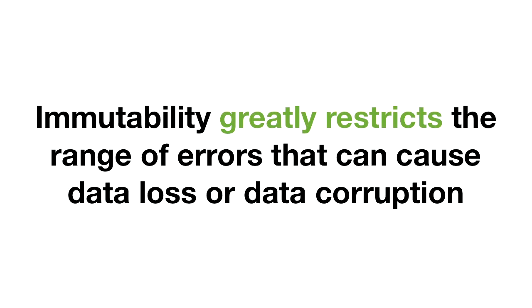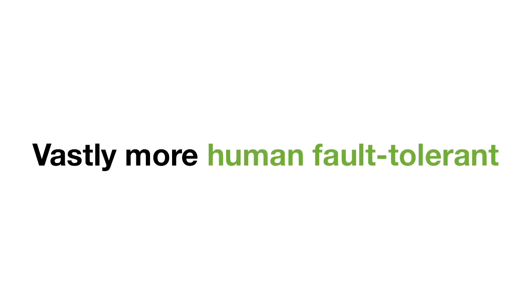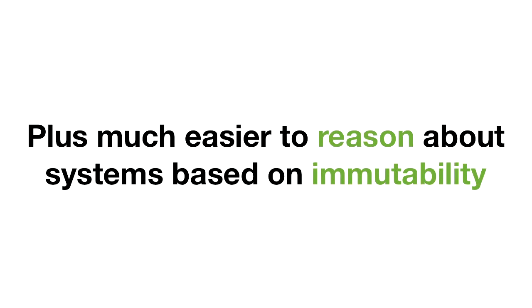Immutability greatly restricts the range of errors that can cause data loss or data corruption, because at a fundamental level you're no longer modifying and deleting data. You can do all sorts of cool things, like add really tight permissions so that it's hard for a random mistake to accidentally delete or modify data. An immutable system is vastly more fault-tolerant than a mutable system. And as a side note, it's also much easier to reason about systems based on immutability — but that's a longer discussion, worth exploring on your own.